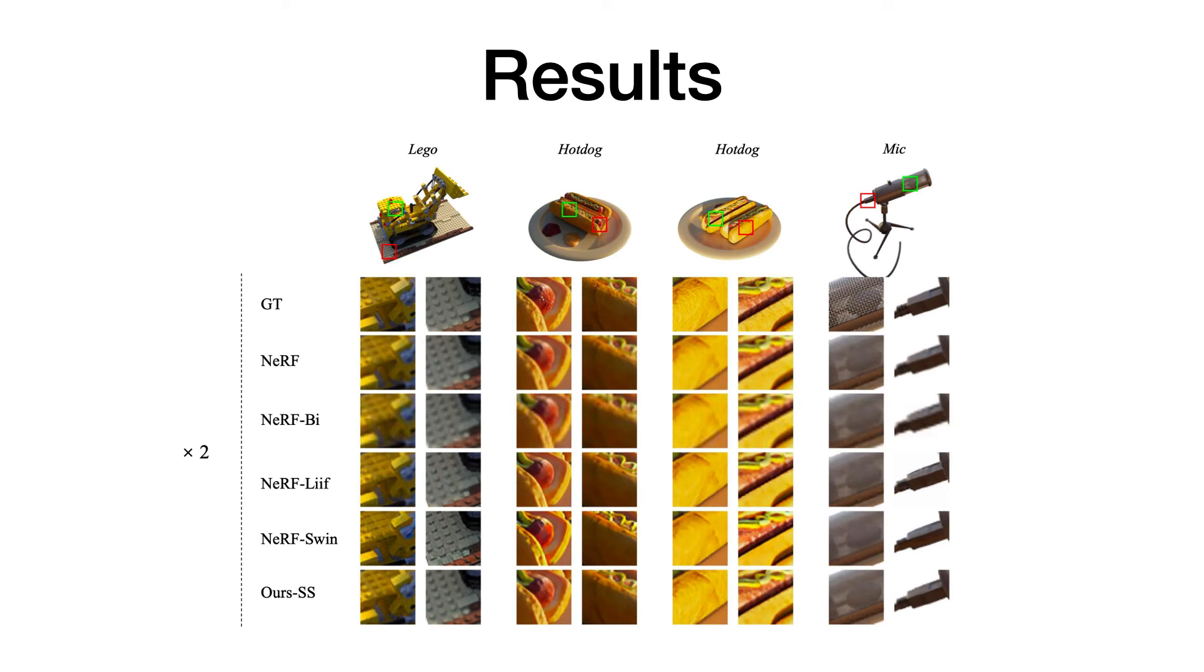We first show the results on Blender dataset. Renderings from NeRF-BI exhibit correct global shapes but lack high-frequency details. Vanilla NeRF produces renderings that can have more details than NeRF-BI if the scene is already well reconstructed at input resolution. However, it is still restricted by the information in the input images.